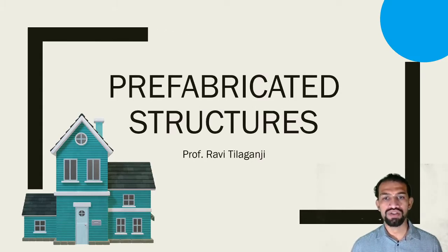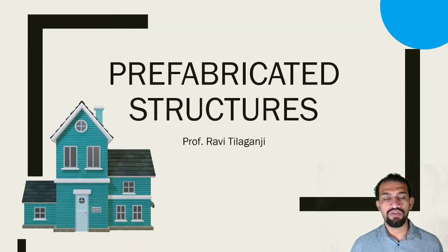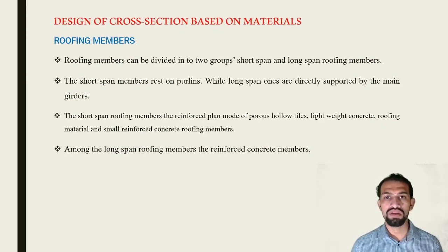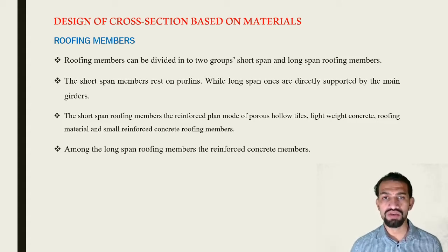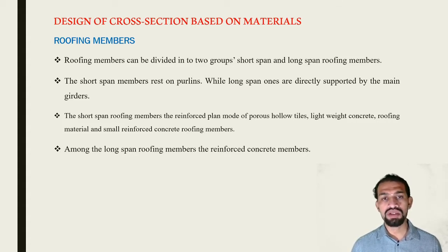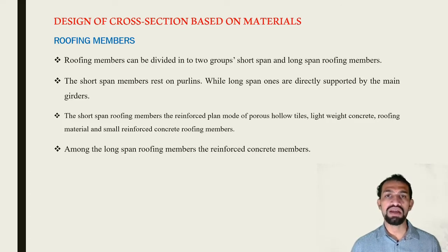Welcome to prefabricated structures. In this video, we cover design of cross sections based on materials. The cross sections to be taken for design are first the roof members, which are divided into two groups: long span and short span roofing groups. Short span members rest on purlins, while long span ones are directly supported on the main girders. Purlins are subsidiary beams and main girders are the main beams considered in the RCC part.